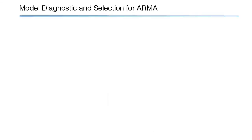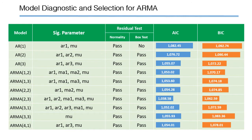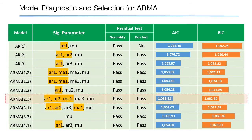Next, we conducted model diagnostics and selected the best model based on significant parameters, model residual tests, and AIC-BIC scores. Based on the summary, it can be seen that AR(1), AR(2), and MA(1) parameters are consistently significant throughout the models, which could indicate their importance in the data. By looking at AIC and BIC scores, ARMA(2,3) is the best model among the 10 possible candidates.